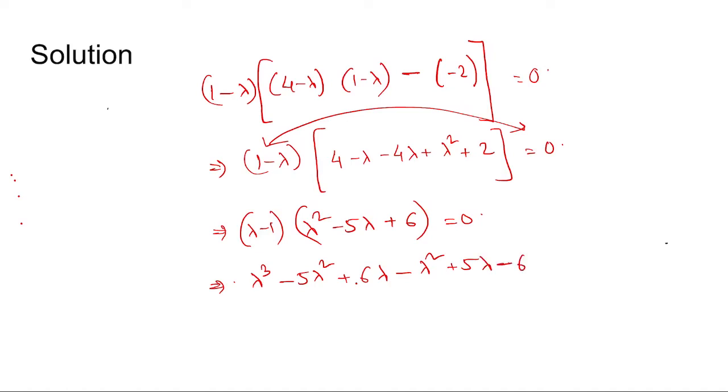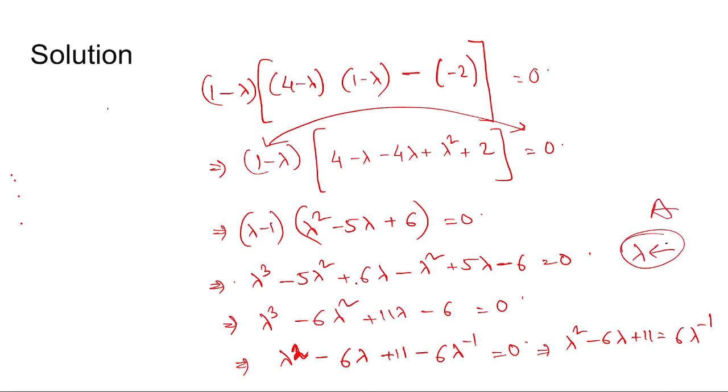Lambda minus 6 equal to 0, and then we have lambda cube minus 6 lambda square plus 11 lambda plus 6 equal to 0, and then we can write lambda square minus 6 lambda plus 11 minus 6 lambda inverse equal to 0, that is 6 by lambda. And hence we can write this as lambda square minus 6 lambda plus 11 equal to 6 lambda inverse.